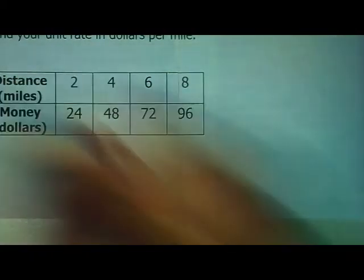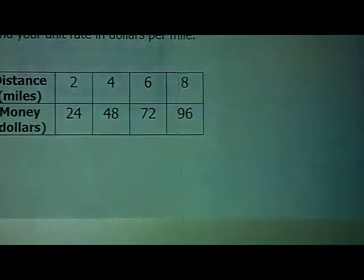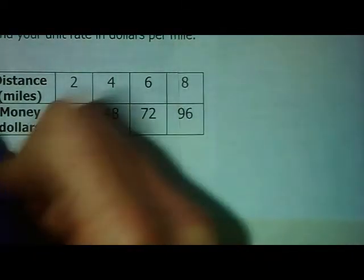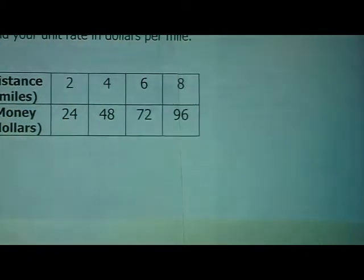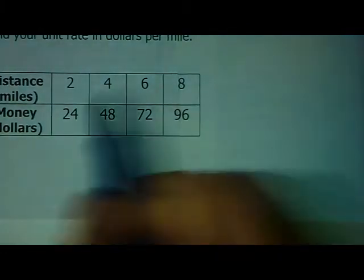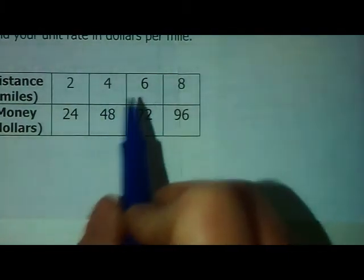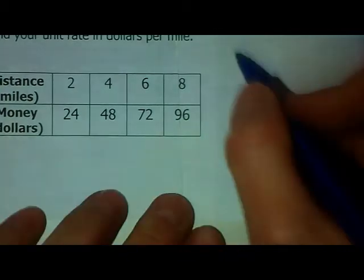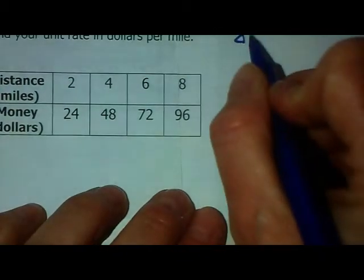The top in the table represents your x or your independent variable. Your money in dollars represents your y or your dependent. In order to figure out a unit rate from a table, you need to figure out what the change in the dependent variable is and divide that by the change in the independent variable.